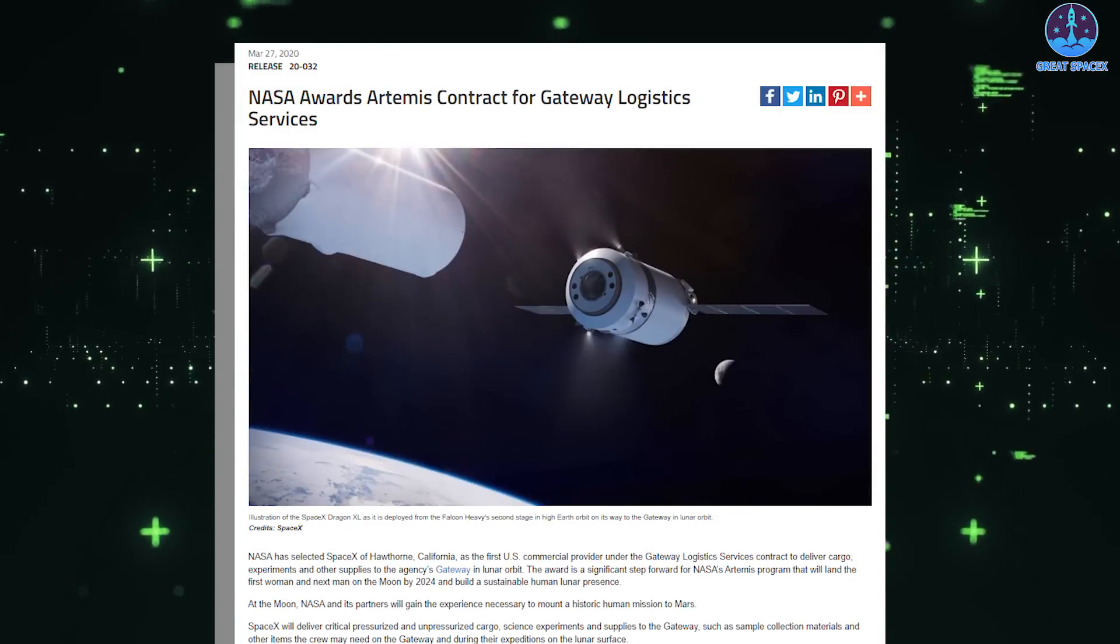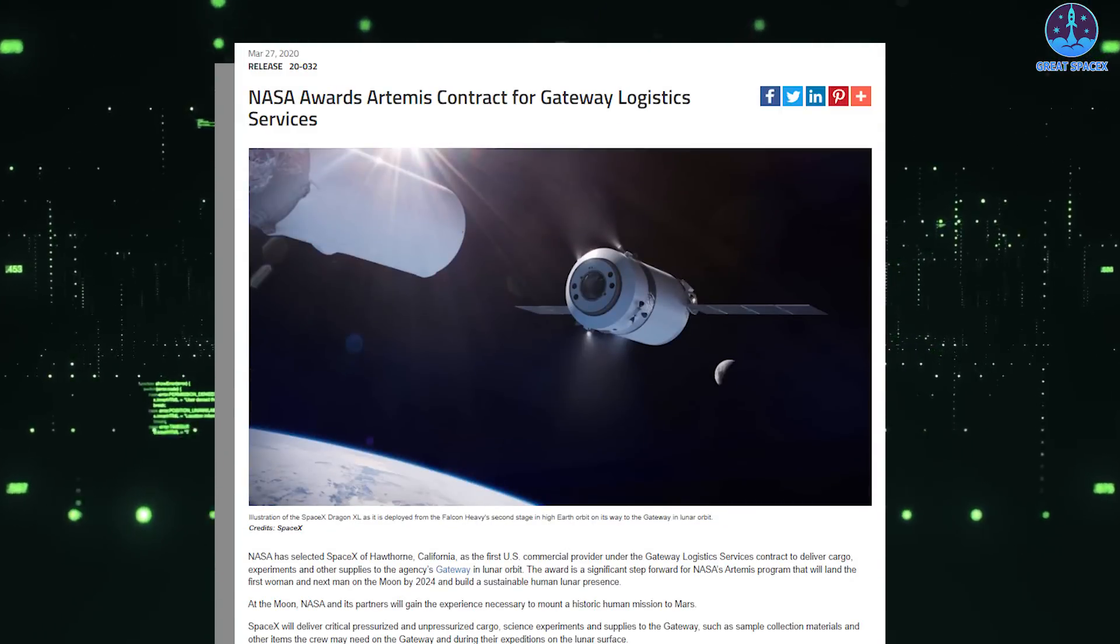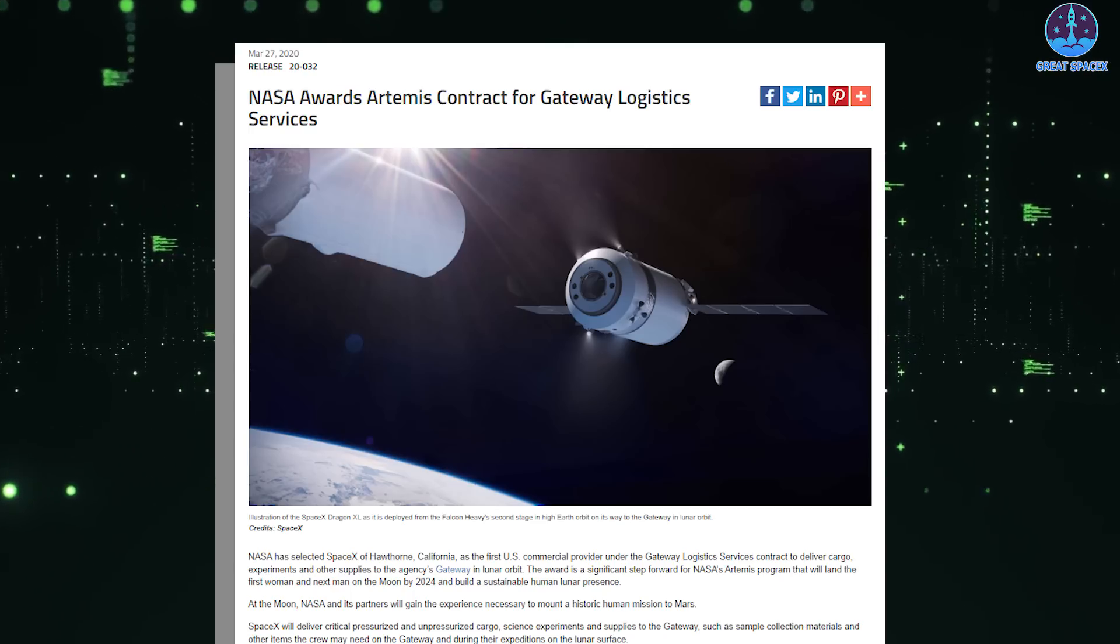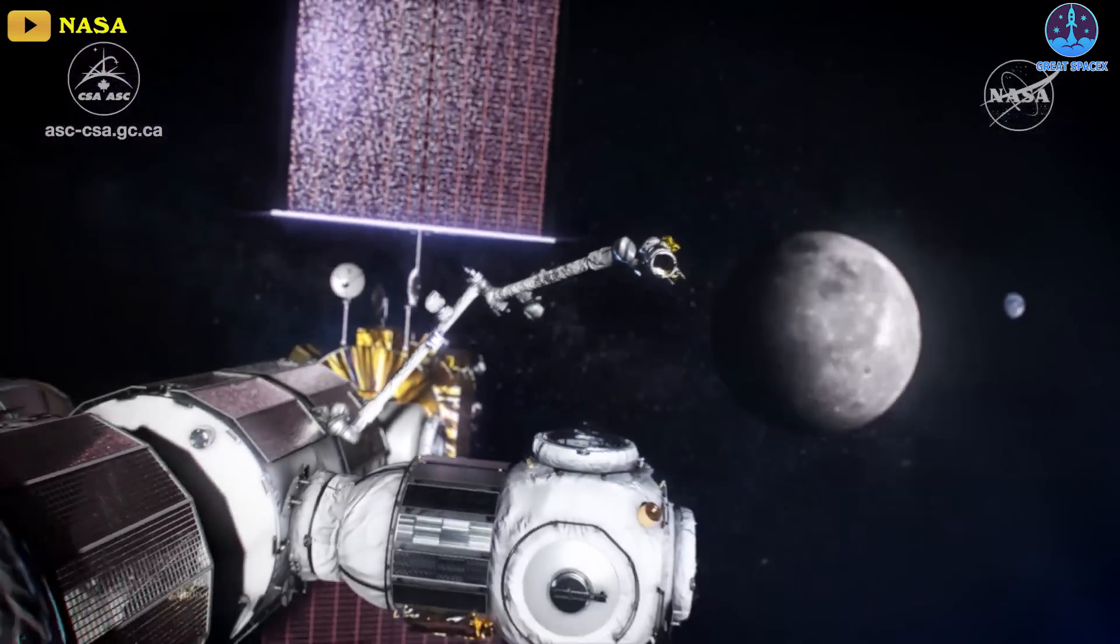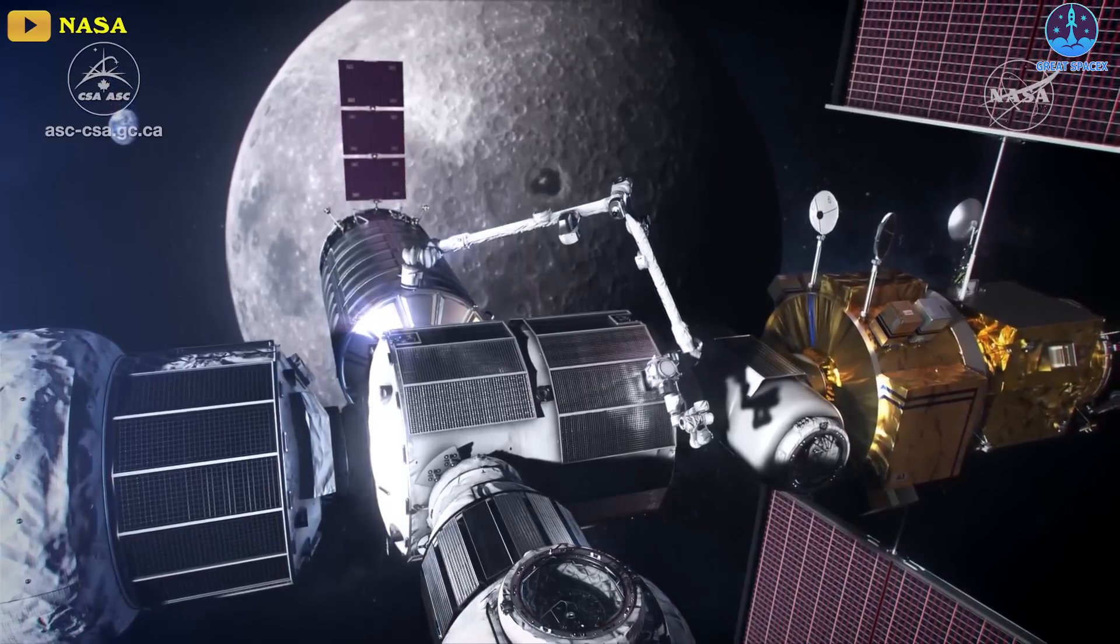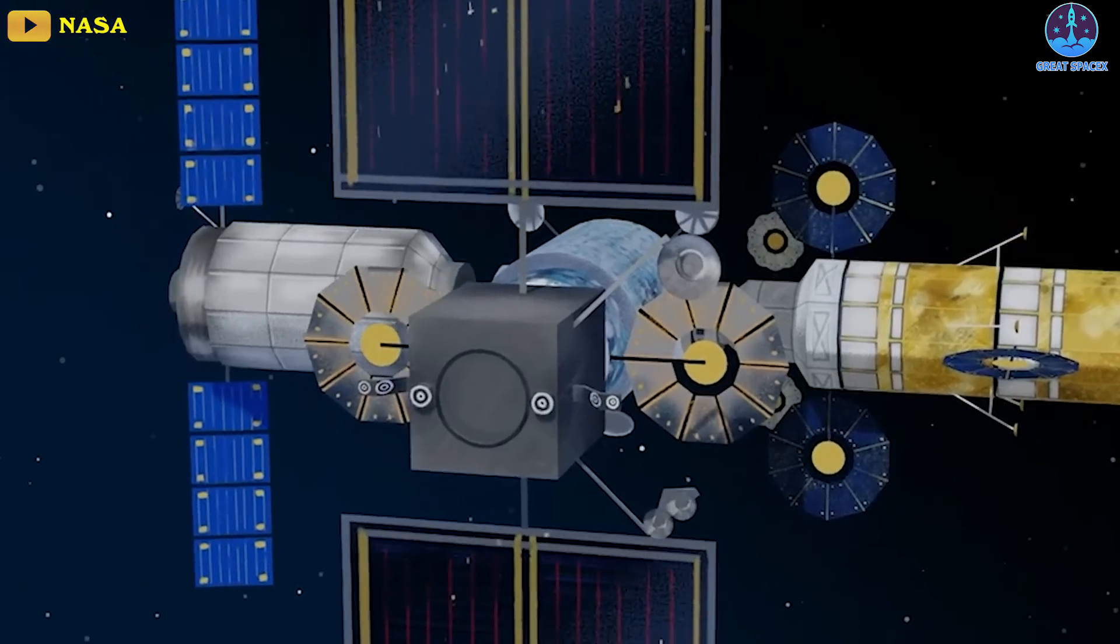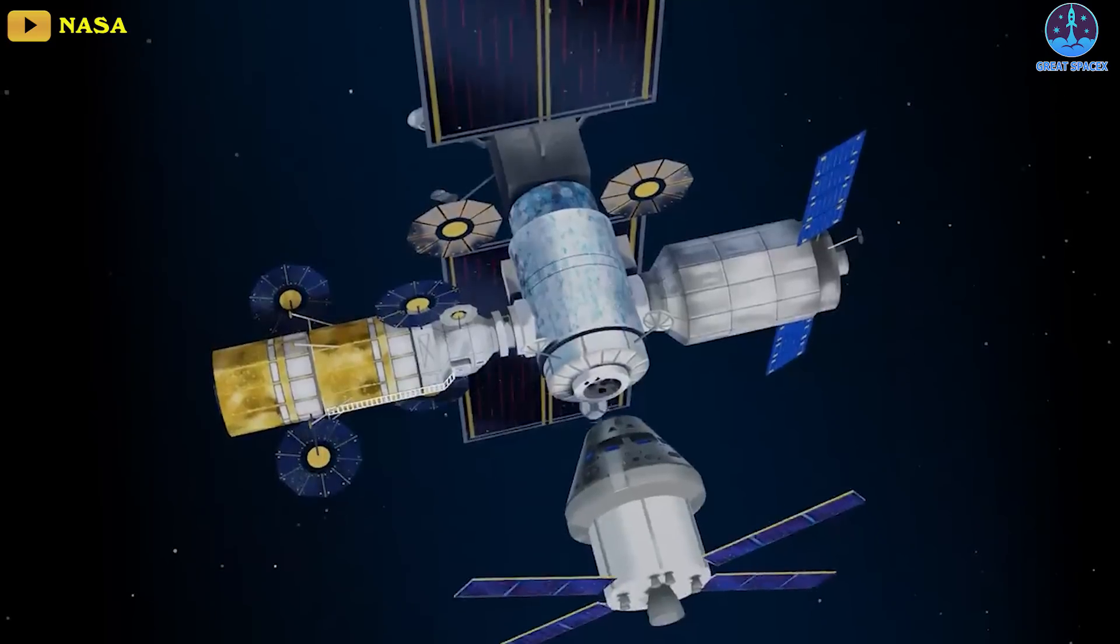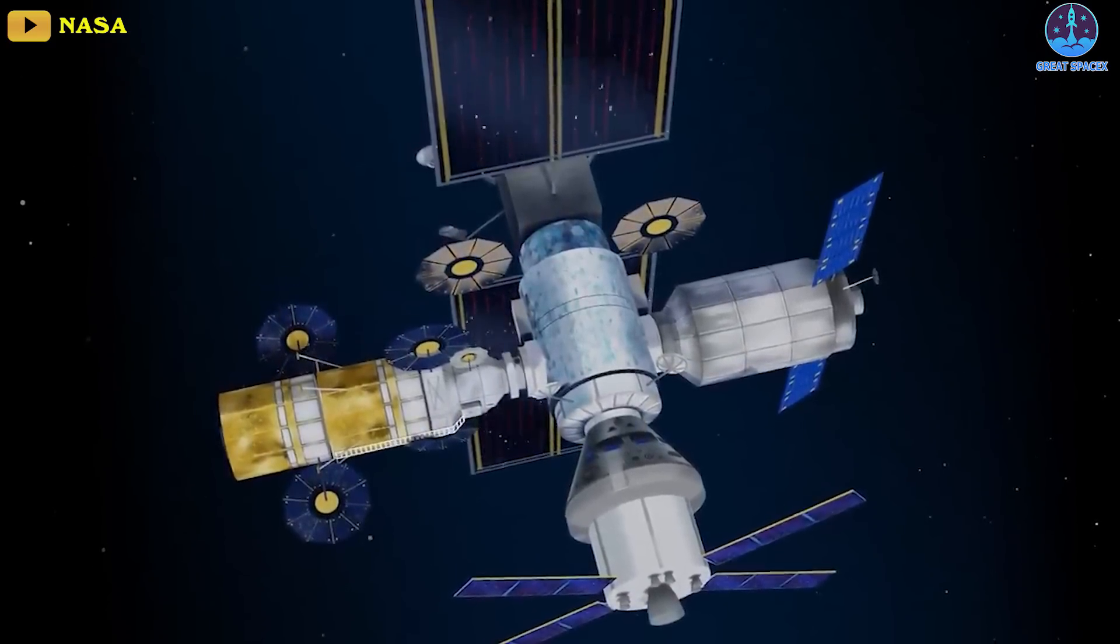In March of 2020, NASA announced that it had selected SpaceX to deliver the bulk of pressurized and unpressurized cargo, experiments, and other supplies to the Gateway, which will be assembled in an elliptical or egg-shaped orbit around the moon. It's necessary in order for a crew to live on and operate a proposed Gateway lunar space station for the first several years of its existence.